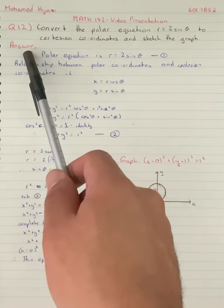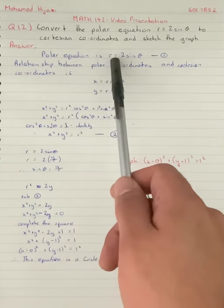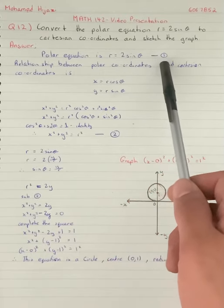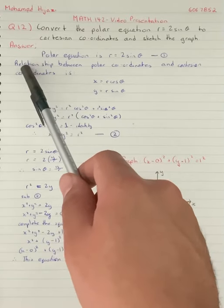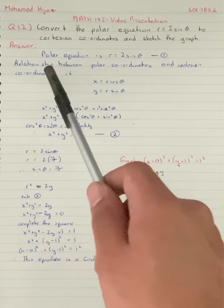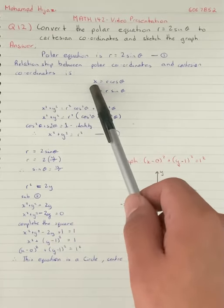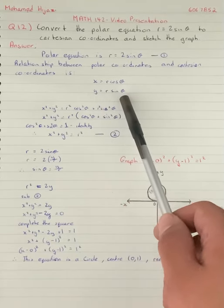To answer this, we know that the polar equation is r = 2sin(θ), which we'll call equation 1. The relationship between polar and Cartesian coordinates is x = r·cos(θ) and y = r·sin(θ).